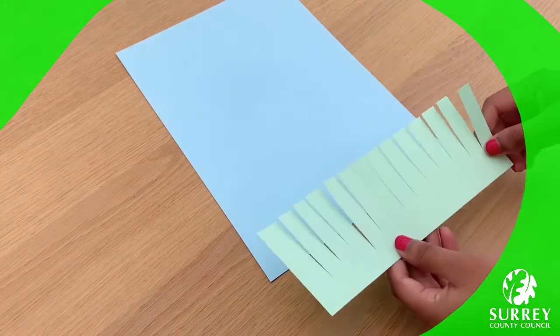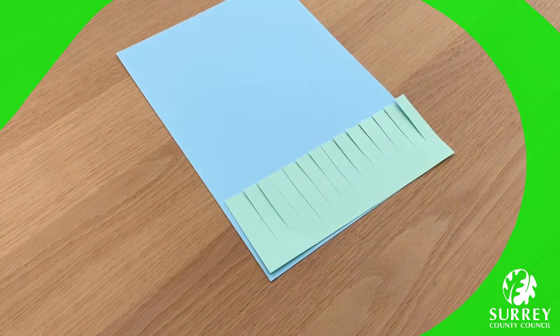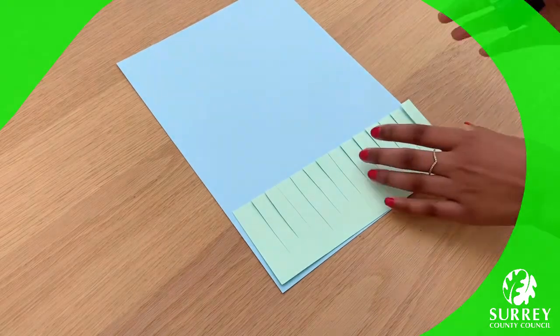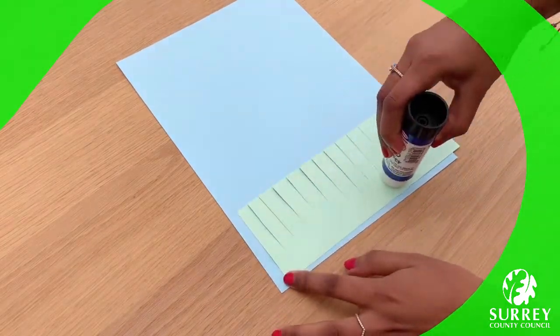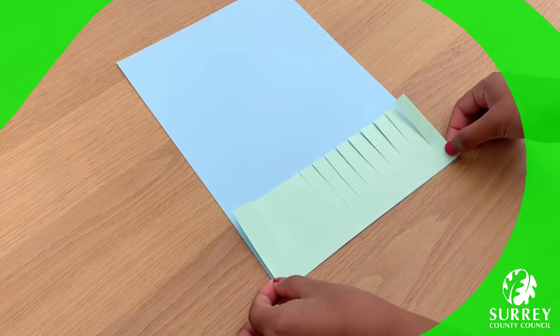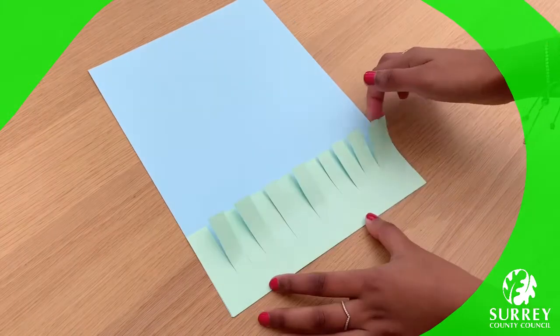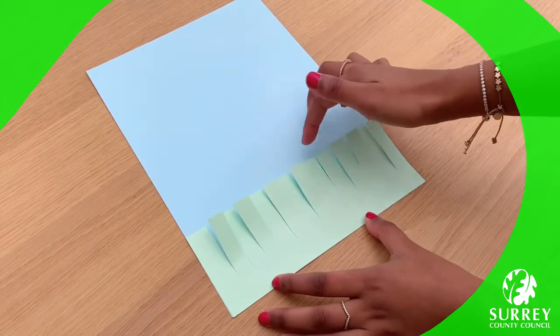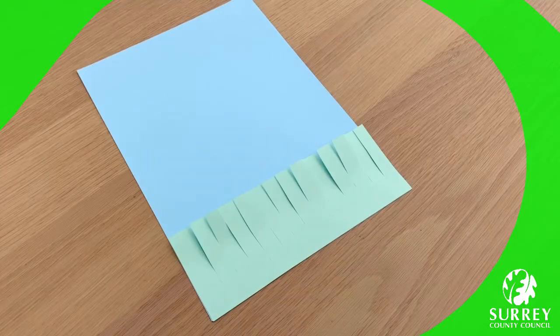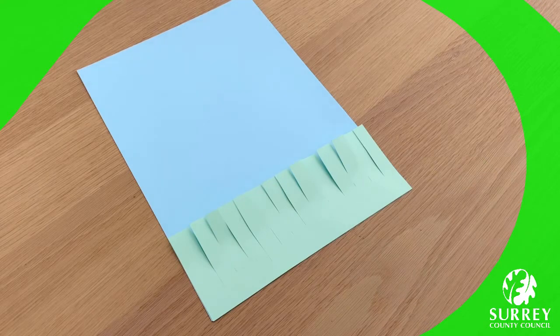Great work everyone! Well done! Now use your glue stick and glue the grass to the bottom of the blue card. I'm just going to bend the grass up a little bit so that it stands out a bit more. Fabulous work everyone! How are you all doing? Make sure you let me know in the comments below!